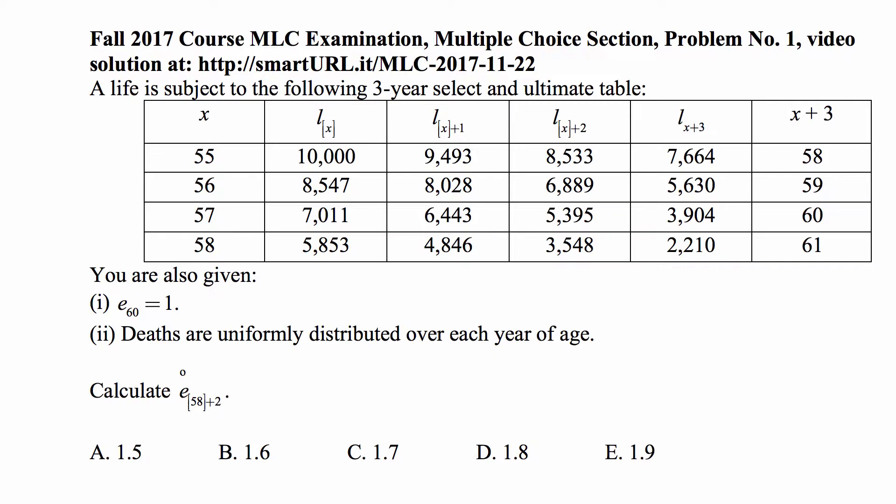You are given that deaths are uniformly distributed over each year of age. Then we are asked to calculate the complete life expectancy for a life that was selected at age 58 but two years later, which, note, is just one year before the table merges into the ultimate regular mortality table.